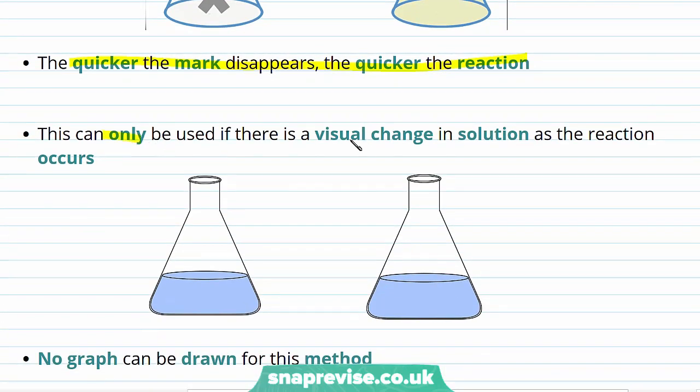However, this method can only be used if there's a visual change in the solution as the reaction happens. If both the reactants and products looked like the two flasks in here, then this method would be useless.